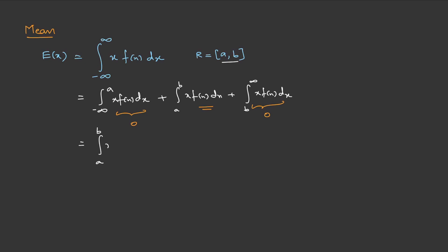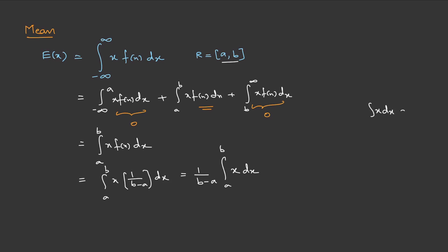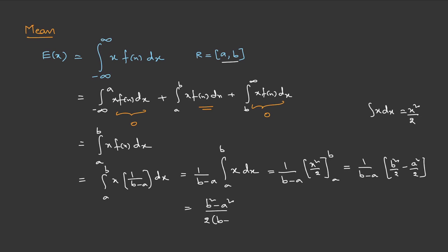We evaluate the integral from a to b of x·f(x) dx, where f(x) is 1/(b minus a). Taking the constant out, the integral of x dx is x²/2. Substituting the limits gives (b²/2 minus a²/2), which is (b² minus a²)/2(b minus a). Expanding b² minus a² as (b minus a)(b plus a) and canceling (b minus a), we are left with (a plus b)/2. Therefore, the expectation of x in a uniform distribution is (a + b)/2.